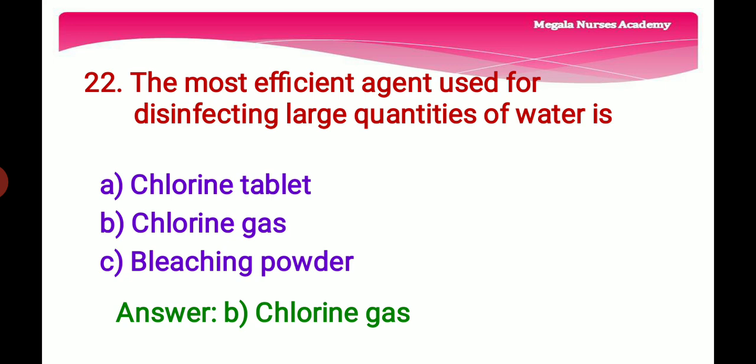Twenty-second question: The most efficient agent used for disinfecting large quantities of water — Option A: Chlorine tablet, Option B: Chlorine gas, Option C: Bleaching powder. The right answer is Option B, chlorine gas, because chlorine gas is used for disinfecting large quantities of water.